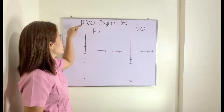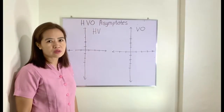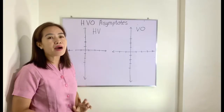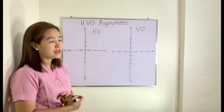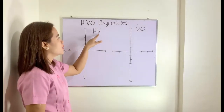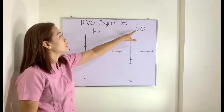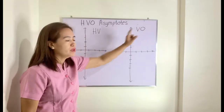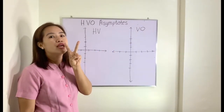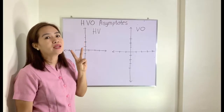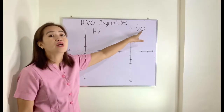HVO means horizontal, vertical, oblique asymptotes. The graph of a rational function can have HV — horizontal and vertical — or VO — vertical and oblique. They always go in pairs. It's either HV or VO.